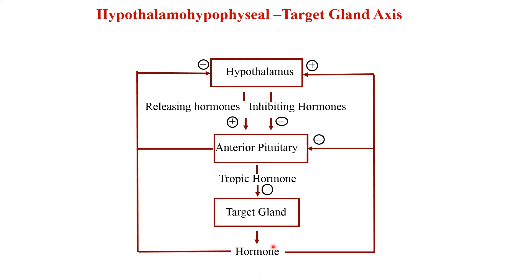Once growth hormone levels increase due to hypoglycemia or something else, growth hormone goes to the hypothalamus to inhibit the release of growth hormone releasing hormone, and also inhibits the release of growth hormone from the pituitary gland. At the same time, it goes to the hypothalamus and stimulates the release of the inhibitory hormone. This is just the feedback mechanism we talked about in the last lecture.